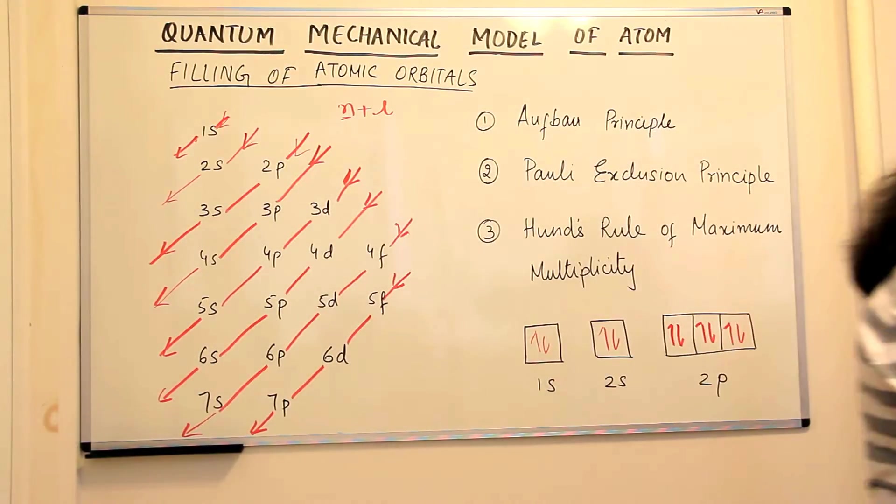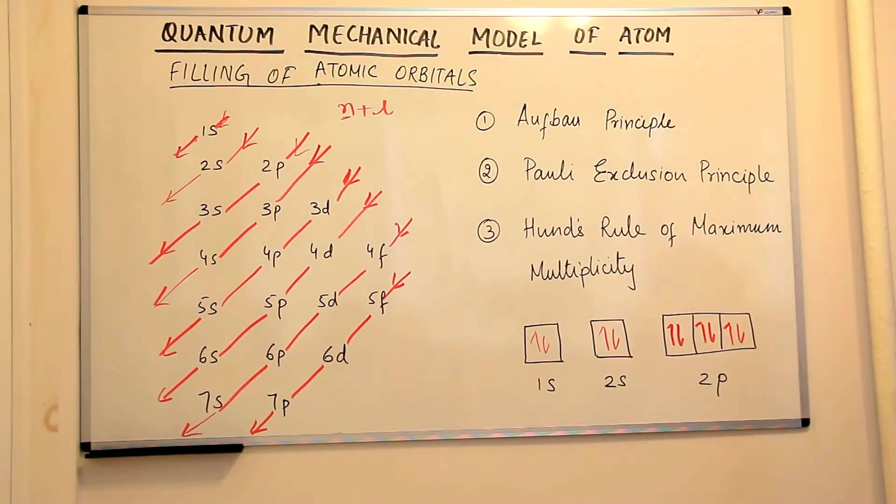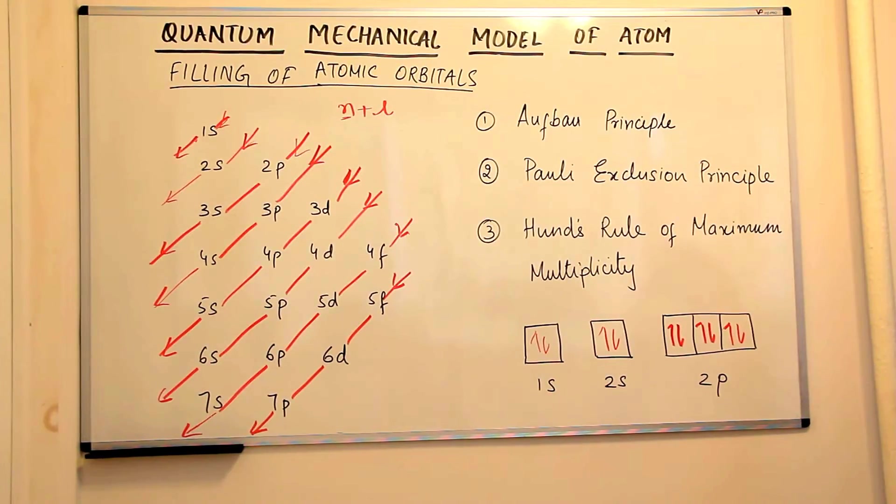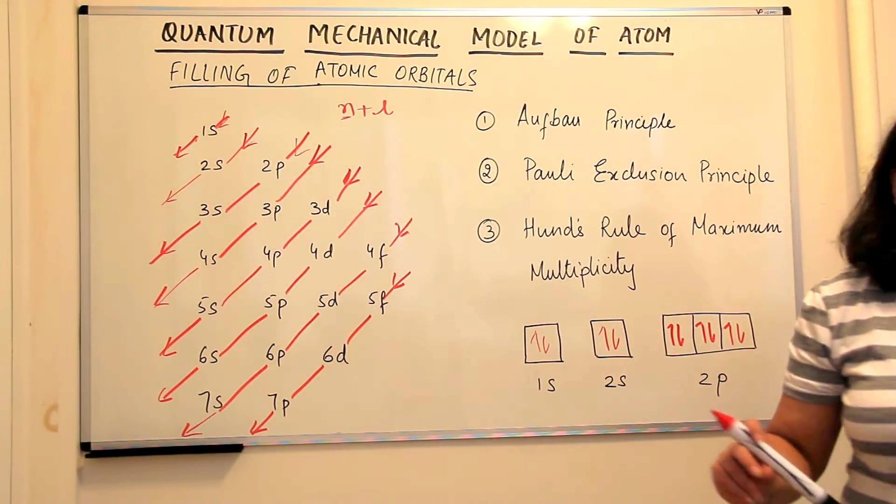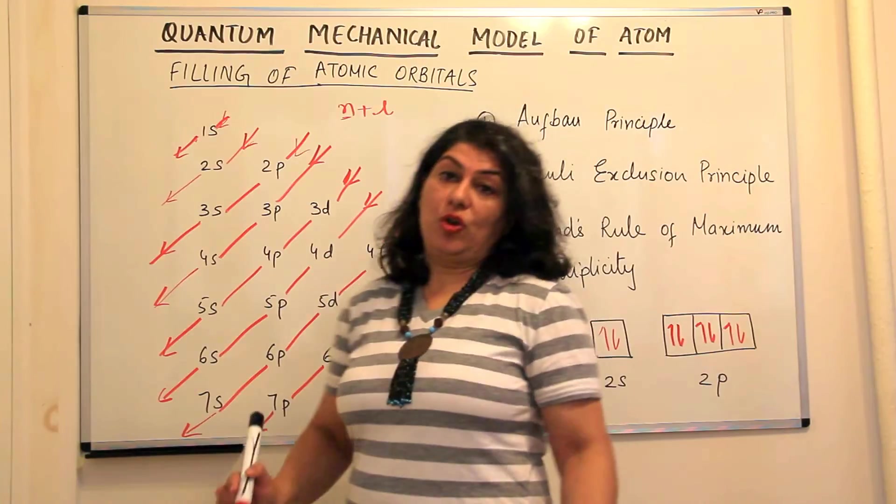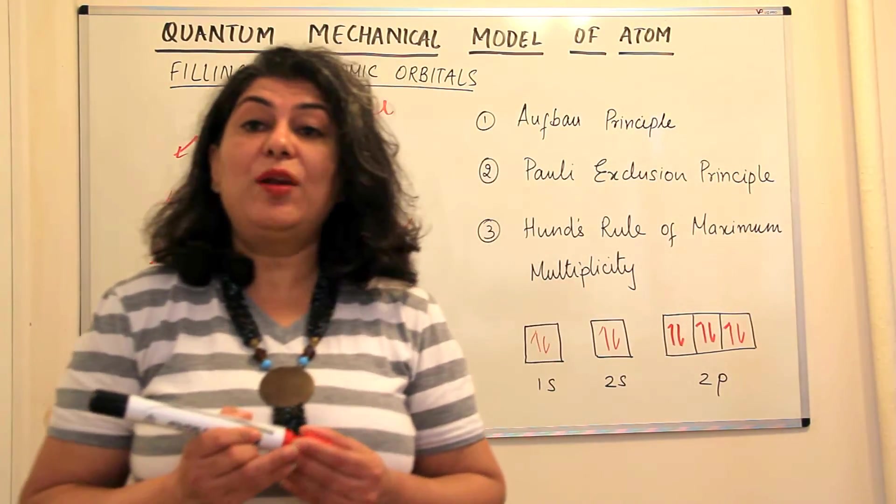So what's the language of this, the Hund's rule of maximum multiplicity? Its pairing of electrons in the orbitals belonging to the same subshell, that is p, d or f does not take place until each orbital belonging to that subshell has got one electron each. That is, it is singly occupied.